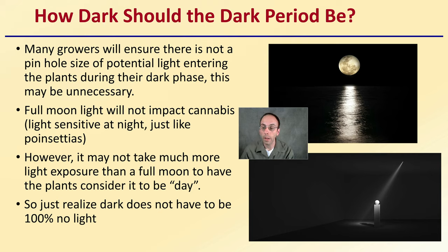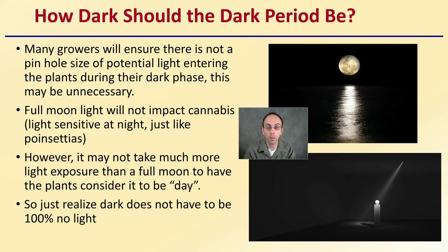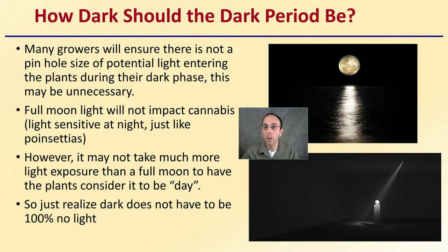Keep in mind, plants growing outside — regular photoperiod-dependent ones — full moon light will not impact cannabis. It is light sensitive at night, just like poinsettias, but full moon intensity of light will not affect cannabis plants. However, it may not take much more light than a full moon to have plants consider it a light-on period. So realize that dark does not have to be 100% no light. While it is important to seal areas off, you don't have to cover every tiny pinhole out of concern your plant will flip into flower or stay in veg. Plants grown outside with full moon light stay on the same photoperiod.